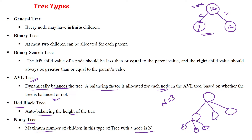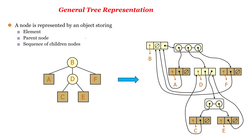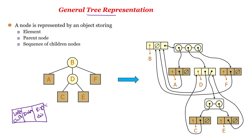The general tree is represented in the form of a data structure. Each node has three fields: one is the data field, another is the left child field, and another is the right child field. There is also one more field denoting the parent node, and a sequence of children nodes. Based on this, the tree is constructed.